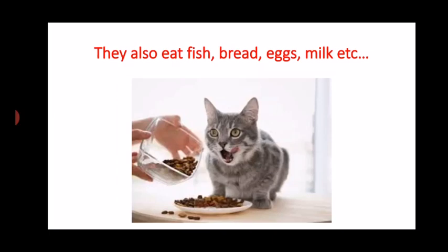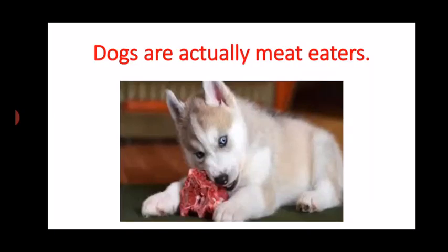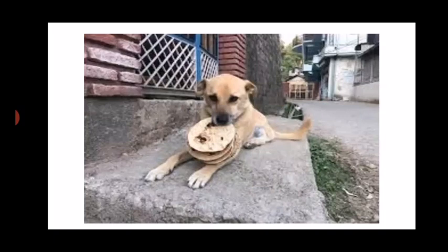Now what about dogs? Dogs are actually meat eaters — they are carnivorous animals and they are descendants of the fox. They were wolves and foxes once upon a time and gradually were domesticated and became dogs. So they are actually like wolves and foxes and love to eat meat. But if you keep a dog at home, you feed it different things from your kitchen — whatever you eat. The dog can eat chapatis, rotis, bhakris. Look at this one sitting with so many rotis, not wanting to share.